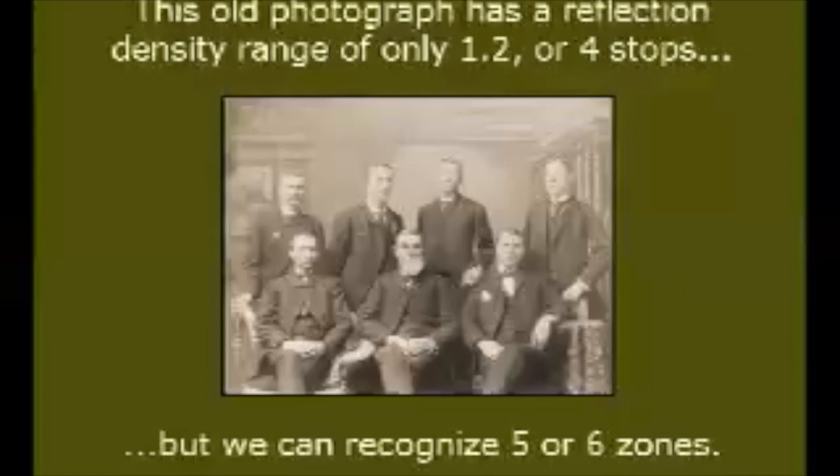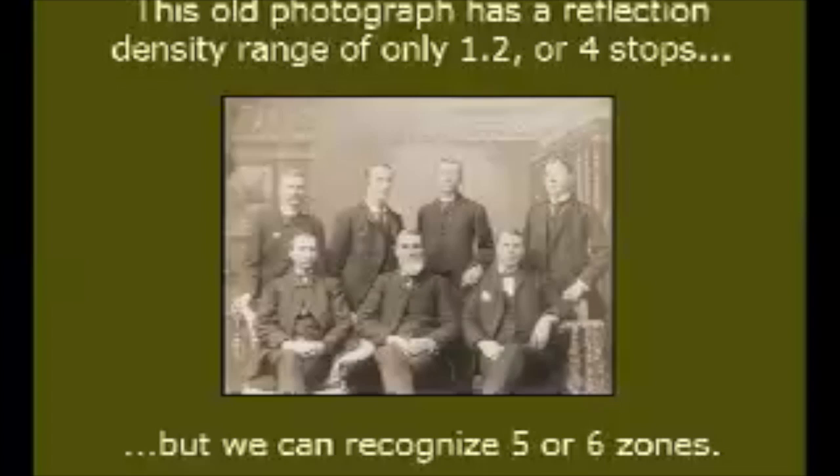Including maximum black and paper white, that's okay — we can accept a photograph as having a satisfactory full-scale of tones even when its real reflection density range is less than the normal seven stops. In the print image, zones represent stops, but they're not often equal.